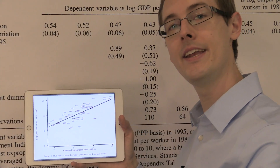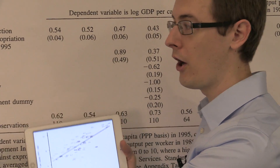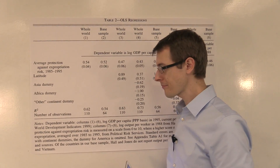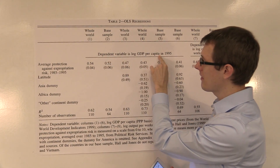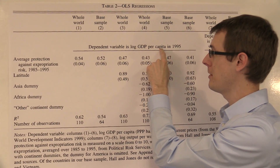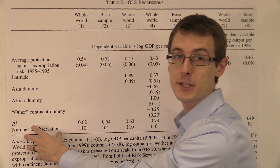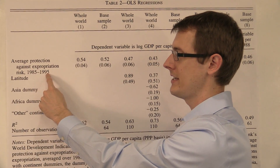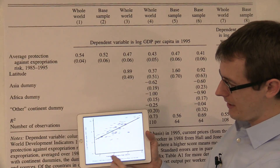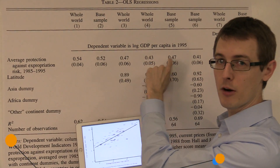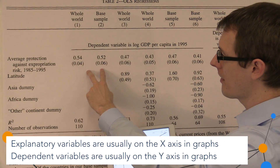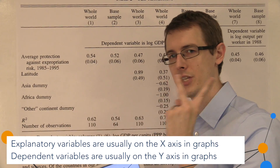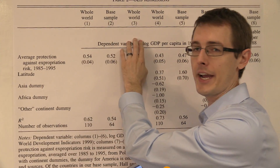Countries with higher property rights tend to have higher economic development. Over here, I've got a regression table that summarizes the same data. Here I've got my outcome variable — economic development, log GDP per capita in 1995. Over here are explanatory variables: average protection against expropriation risk, 1985–1995. This is the same variable plotted on the horizontal axis, and this is the same variable on the vertical axis. In these two specifications, these are the only variables I'm looking at — just two variables: property rights and economic development.